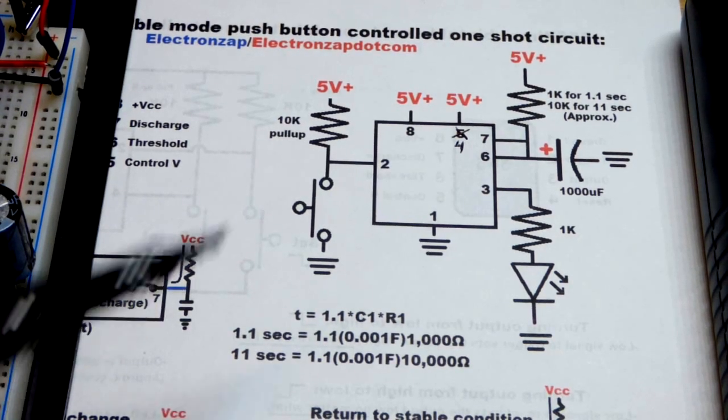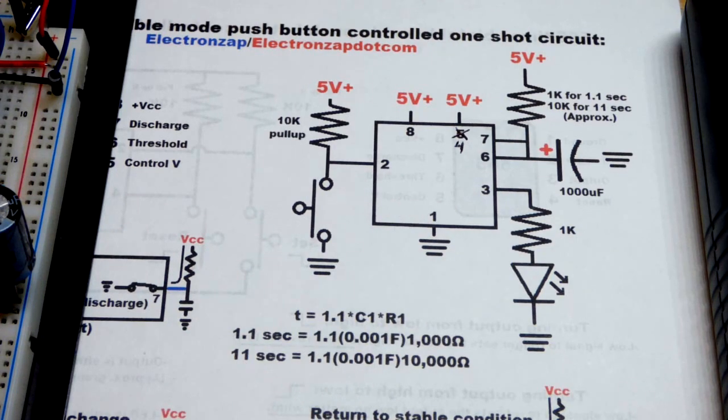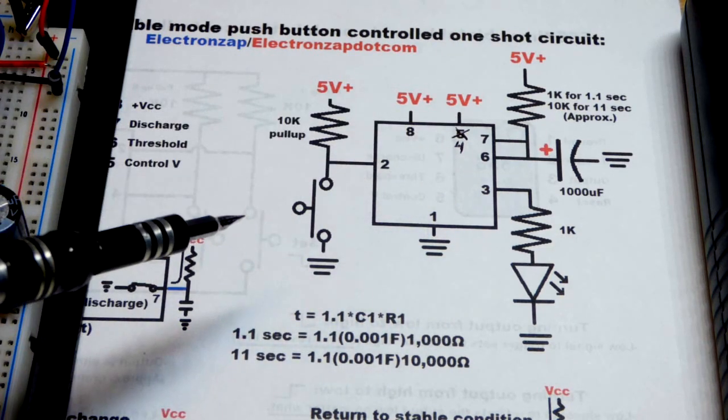In this video, we're going to look at the 555 timer. I forgot to write 555 there. This is an old sheet. In fact, I made a mistake there.